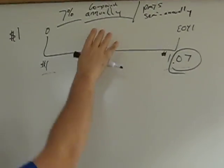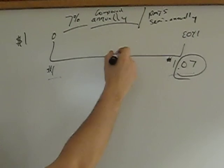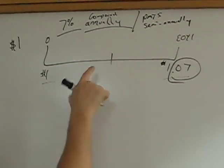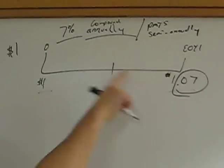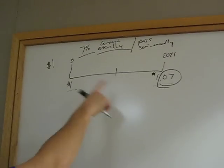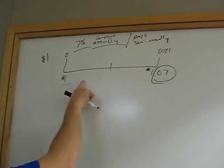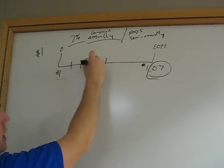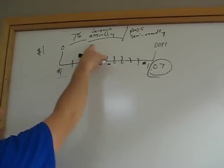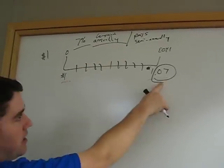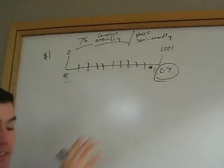the thing to remember always is I'm only compounding annually. So I'm going to end up at the same place. It doesn't matter where my payments happen. If I get my payments halfway through the year, if I get a payment every day, because I compound annually, I have to end up at $1.07. Is everybody cool with that?